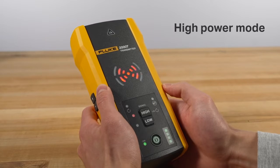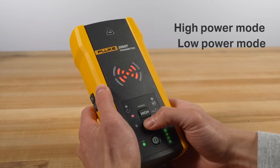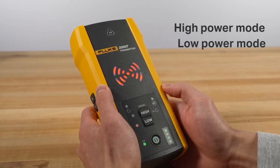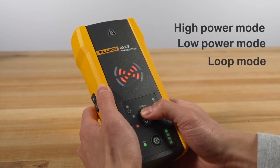Just select from high power mode for normal circuits, low power mode for precision tracing in difficult areas, and loop mode for closed loops on de-energized circuits.